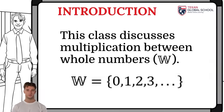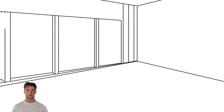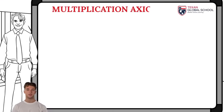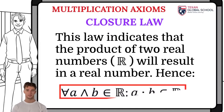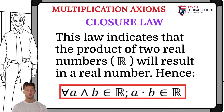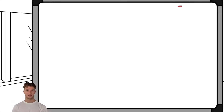The first axiom in the multiplication of real numbers that we will analyze is the closure law. This law indicates that the product of two real numbers will result in a real number. Let's look at an example.